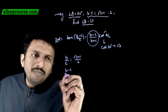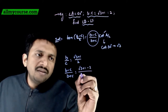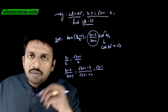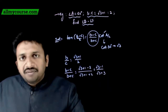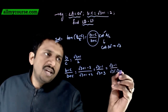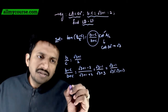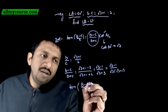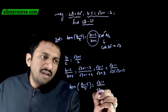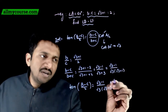Using componendo and dividendo on b/c equals (root 3 plus 1)/2, we get (b minus c)/(b plus c) equals (root 3 plus 1 minus 2)/(root 3 plus 1 plus 2) equals (root 3 minus 1)/(root 3 plus 3) equals (root 3 minus 1)/(root 3 times (root 3 plus 1)). Now substituting: tan((B minus C)/2) equals (root 3 minus 1)/(root 3 times (root 3 plus 1)) times root 3.